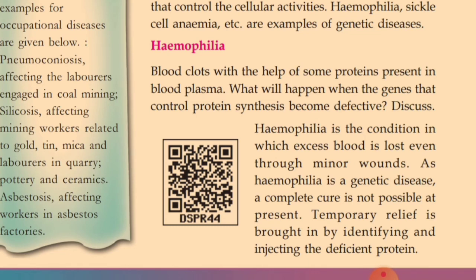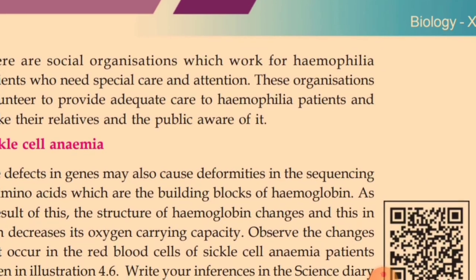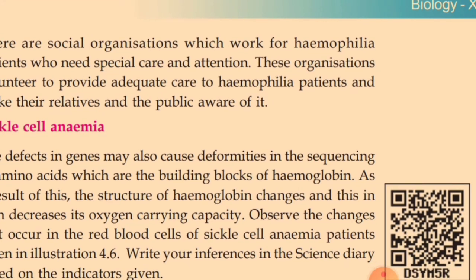The deficient protein can be identified and injected to control the disease. There are social organizations which work for hemophilia patients who need special care and attention. These organizations volunteer to provide adequate care to hemophilia patients and make their relatives and the public aware of it.